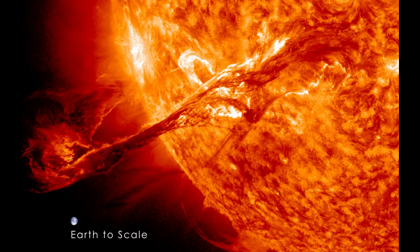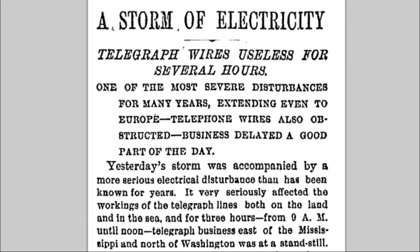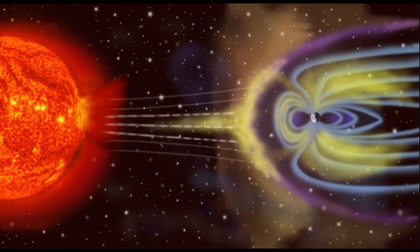In 1859 there was an event called the Carrington event, which gives us some idea of what it would be like if one of these hit the earth. When it hits the earth, the earth's magnetic field automatically defends us against these solar particles — the field itself strengthens and also moves, and then when the particles go away it weakens.